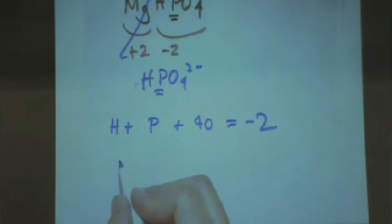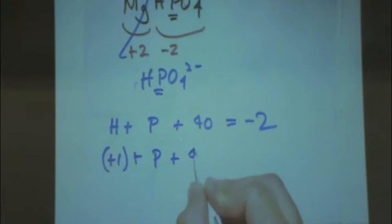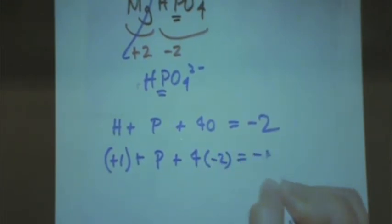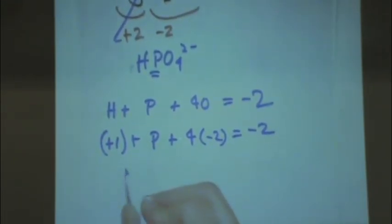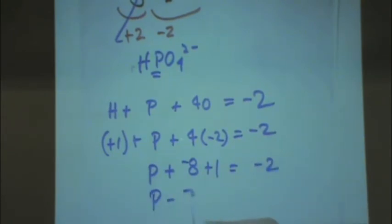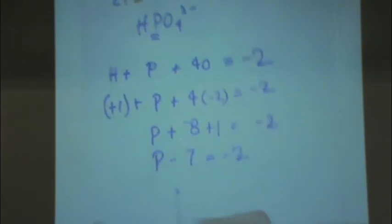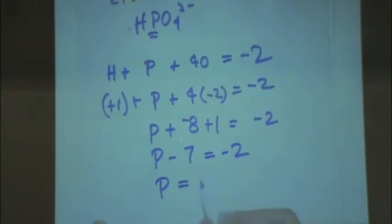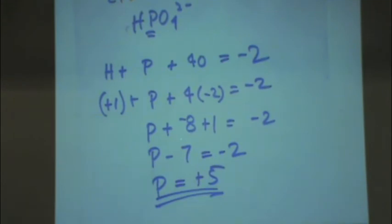Hydrogen, what's its typical charge? Plus one. Phosphorus, that's the one we're looking for. Oxygen is? Negative two. Negative two. Now you just solve this equation. So phosphorus plus a negative eight and then a plus one equals minus two. Phosphorus, it looks like minus seven equals negative two. Change that over to the other side. Seven minus two, that's going to be plus five. Which is not to say what you predict from the periodic table. Usually you guess minus three from the periodic table. But a lot of these can have multiple charges.